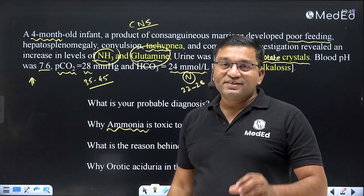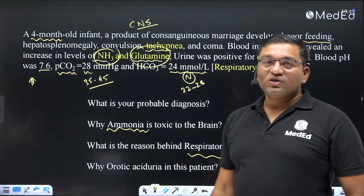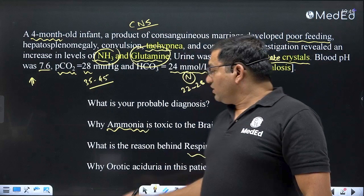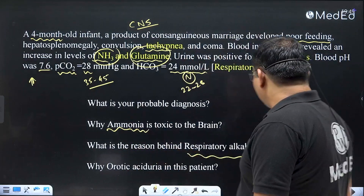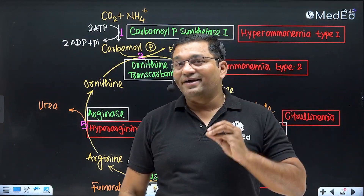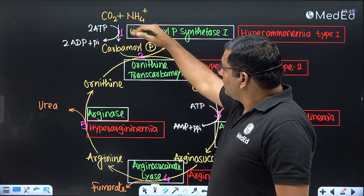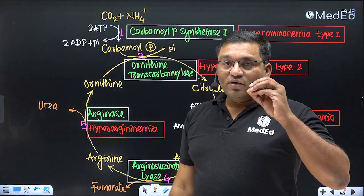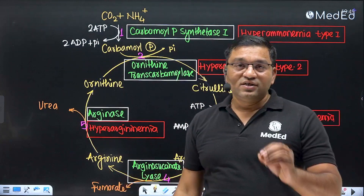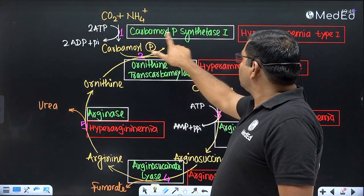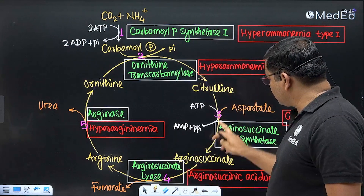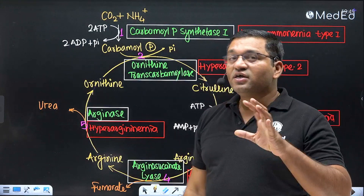The history indicates a urea cycle disorder. Whenever there is a urea cycle disorder, there is an increased ammonia level that causes CNS manifestations and other symptoms. This important cycle was given by Sir Hans Krebs and Kurt Henseleit. It occurs in the liver. The first two steps — CPS1 and ornithine transcarbamylase — occur in the mitochondria. The next three steps — third, fourth, and fifth — occur in the cytosol.